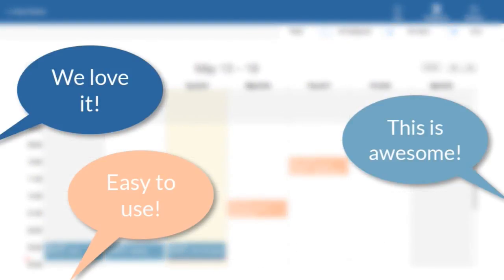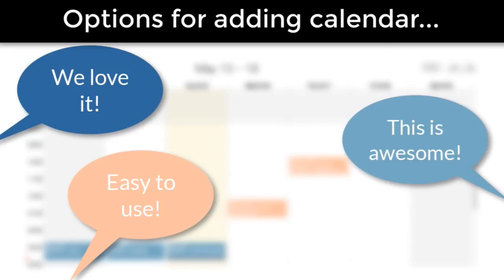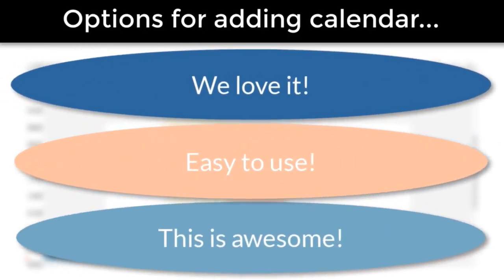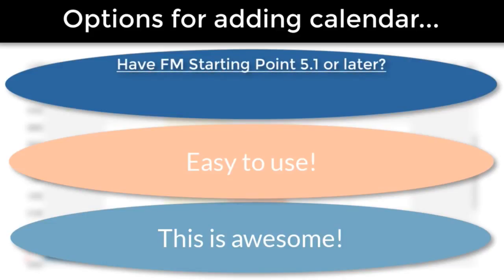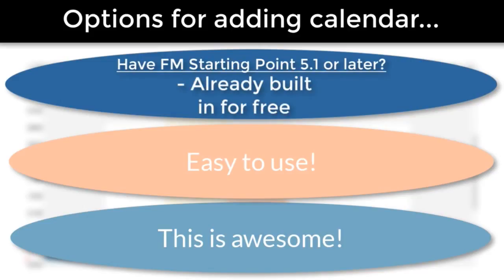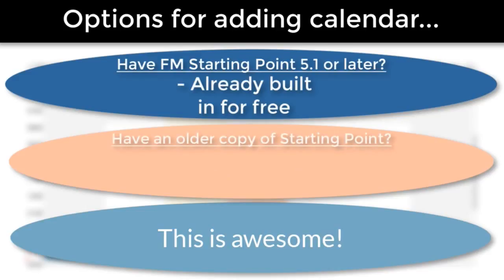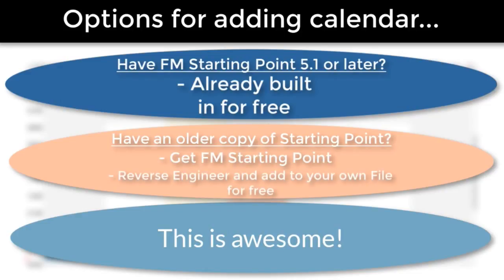If you want a totally free copy of this calendar already bolted into FileMaker, we've already done that for you with FM Starting Point. If you have a copy of FM Starting Point 5.1 or later, you have the calendar kit totally built in already. If you're using an older copy of FM Starting Point or you have your own FileMaker solution, you can get FM Starting Point — which is a free download — and you can actually reverse engineer and take the calendar out of it and move it into your own file. That's totally free and something you can do immediately.